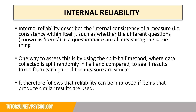Let's start by taking a look at internal reliability. Internal reliability describes the internal consistency of a measure — in other words, the consistency within itself — such as whether the different questions, known as items, in a questionnaire are all measuring the same thing. One way to assess this is by using the split-half method, where data collected is split randomly in half and compared to see if results taken from each part of the measure are similar. Reliability can therefore be improved if items that produce similar results are used.